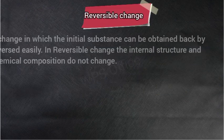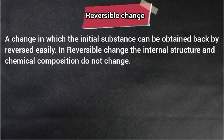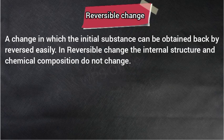Reversible change — a change in which the initial substance can be obtained back by reversing the action easily. ऐसा परिवर्तन जिसमें प्रारंभिक अवस्था में जो पदार्थ होते हैं, पुनः उन्हें उसी रूप में आसानी से प्राप्त कर सकें. In reversible changes, the internal structure and chemical composition do not change — आंतरिक संरचना और रासायनिक संघटन में कोई परिवर्तन नहीं होता, सिर्फ उसके आकार या रूप में परिवर्तन हो सकता है.